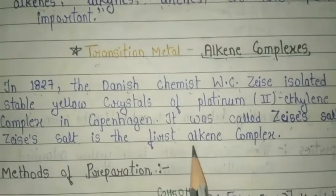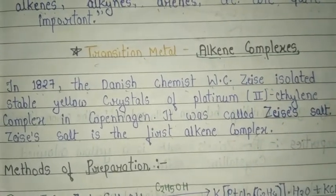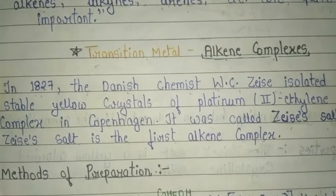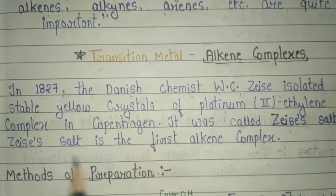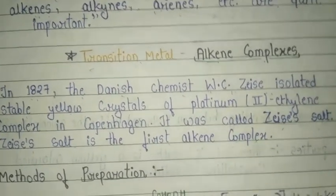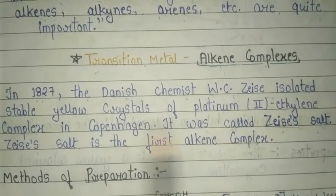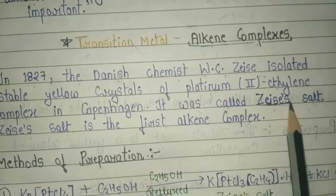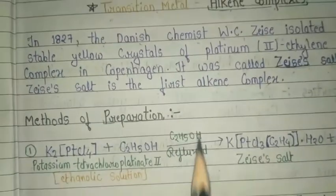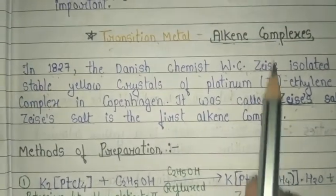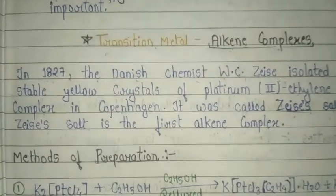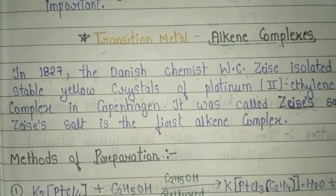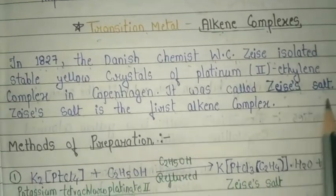The Danish chemist W.C. Zeise isolated a stable yellow crystal of a platinum-ethylene complex in Copenhagen, which is called Zeise's salt. This was the first alkene transition metal complex discovered, in 1827 — the first alkene complex was Zeise's salt.